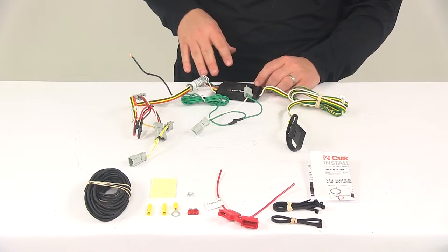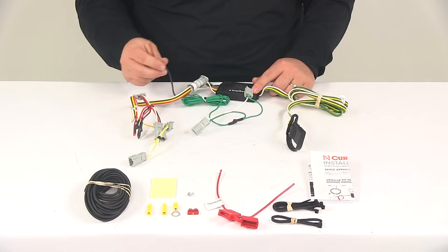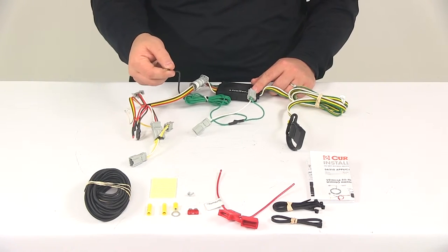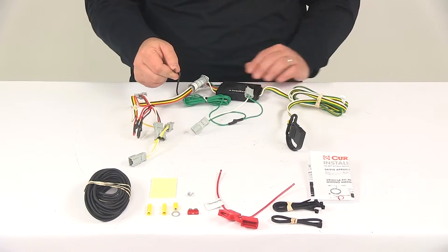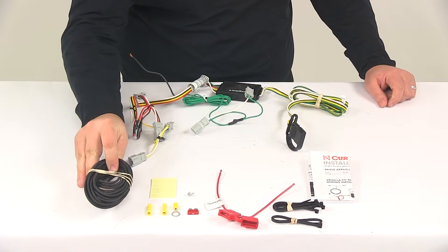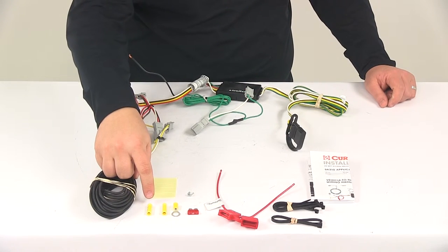Now once you get all that done, you'll need to run your hot lead to your vehicle battery. The hot lead is the black wire right here. It's a short black wire coming out of the box. This needs to get connected to the bundle of black wire with one of the included butt connectors.